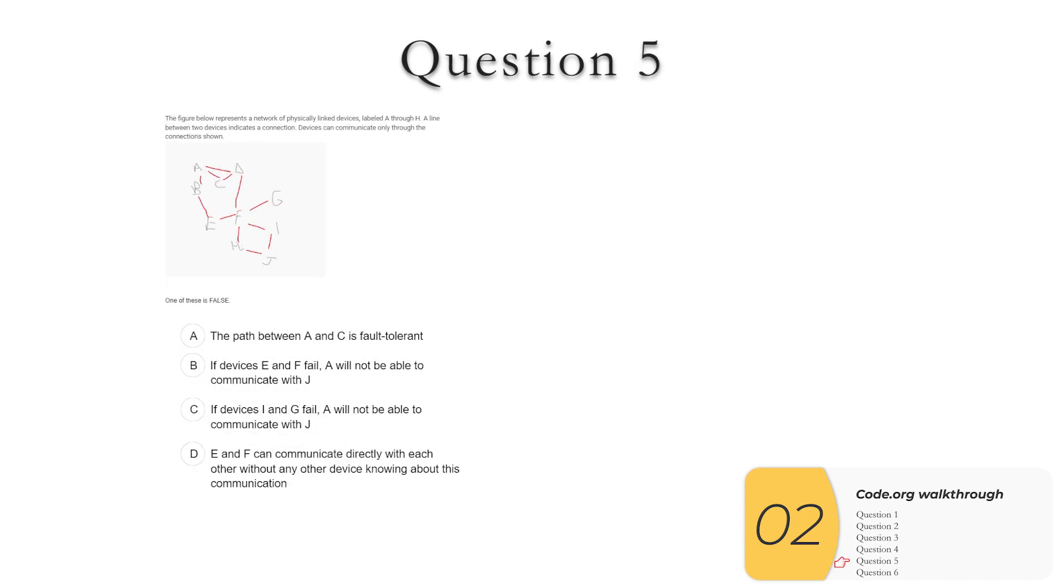Question five. This is a general question about redundancy and fault tolerance. So one of these is false. The path between A and C is fault tolerant. A is a true statement because I can go from A to C directly, or I can go from A to D to C. So because this is true, it's not the answer I'm looking for. B. If E and F fail, A will not be able to communicate with J. So if that happens, A, B, C, D are left on an island. That is true. A is not going to be able to communicate with J, so that's not the answer I'm looking for.